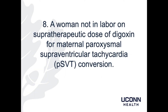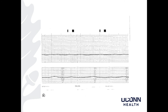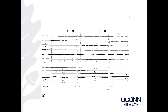Patient 8 is a woman who is not in labor on supratherapeutic doses of digoxin for maternal paroxysmal supraventricular tachycardia that the doctors are trying to convert. She's on a lot of digoxin, which also gets to the baby. My read: baseline of 90s, minimal variability, accelerations are absent, decelerations are absent. This is Category 2 to 3. The reason it's Category 2 to 3, as opposed to the previous patient, is that the baseline is below normal in the 90s.